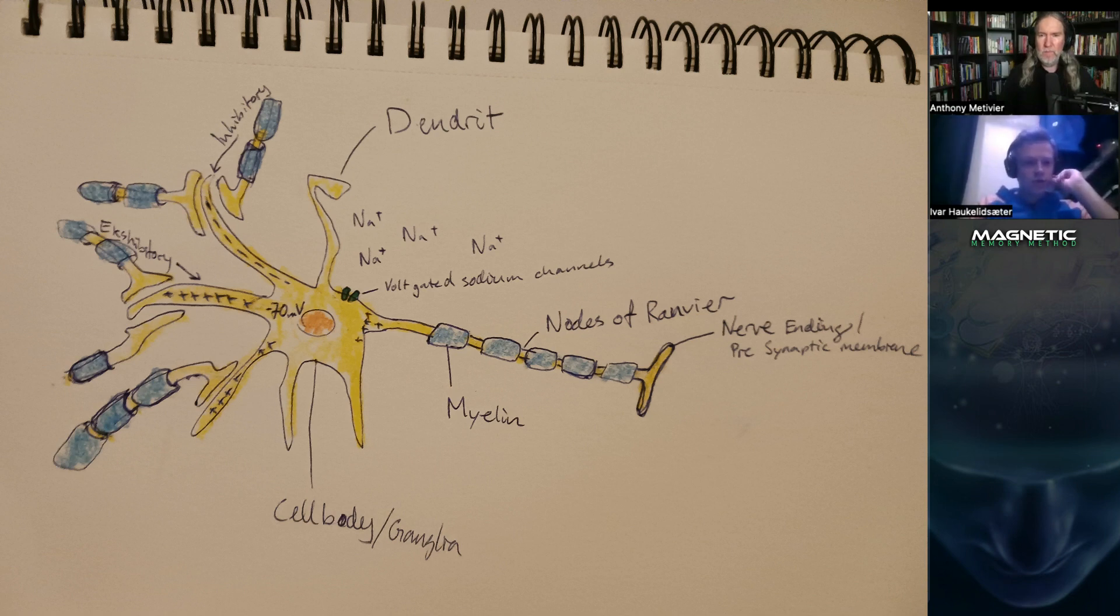They can be inhibitory or excitatory, sending positive or negative charge. The cell has a static negative charge, about minus 70 millivolts. If there's enough excitatory stimulus, the cell will reach a threshold value which opens the voltage-gated sodium channels.